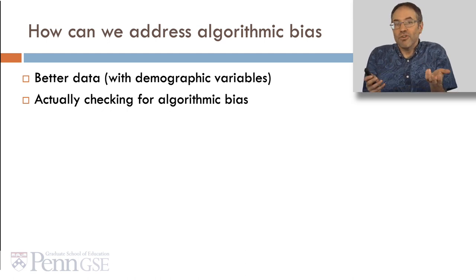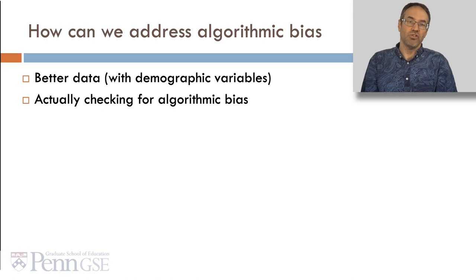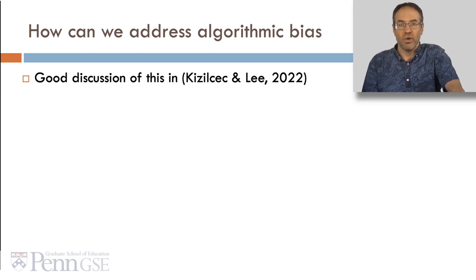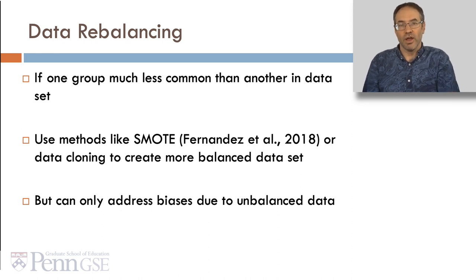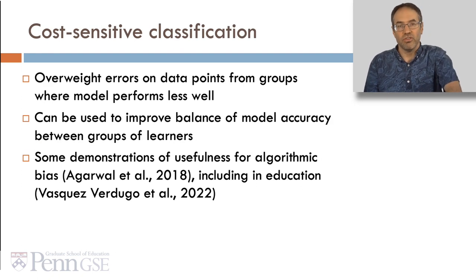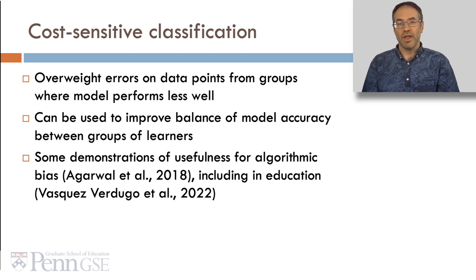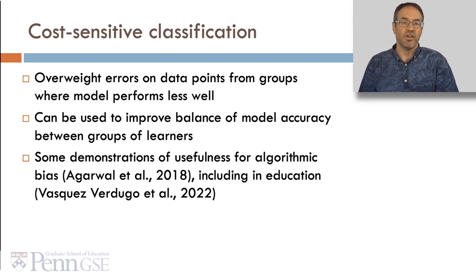How can we address algorithmic bias? First, we have to have better data that is actually representative of students and that includes demographic variables — though not as predictors. Then we have to actually check for algorithmic bias and try to fix it. There's a good discussion of methods in Kizilchek and Lee 2022. One approach worth considering is data rebalancing: if one group is much less common than another in the dataset, we can use methods like SMOTE or data cloning to create a more balanced dataset. This can only address biases due to unbalanced data, but that's a big part of it. There's also cost-sensitive classification, where you overweight errors on data points from groups where the model performs less well, improving the balance of model accuracy between groups — with demonstrations of usefulness including one in education by Vasquez Verrugo and colleagues.